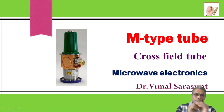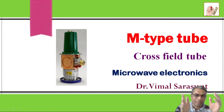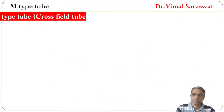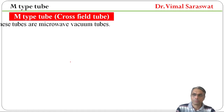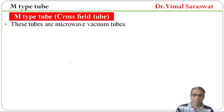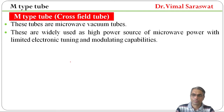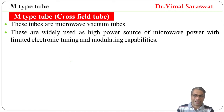Hi friends, welcome back on our YouTube channel. In the current lecture of microwave electronics, we will discuss about M-Type tube or cross-field tube. So what is M-Type tube or cross-field tube? These are microwave vacuum tubes, widely used as high power source of microwave power with limited electronic tuning and modulating capabilities.